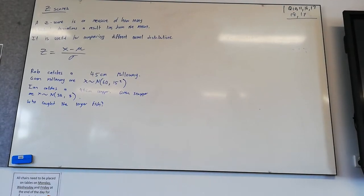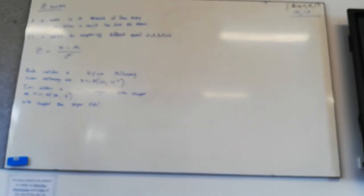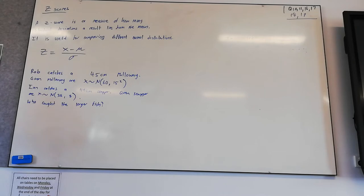Z-scores. So a z-score is a measure of how many standard deviations a result is from the mean.